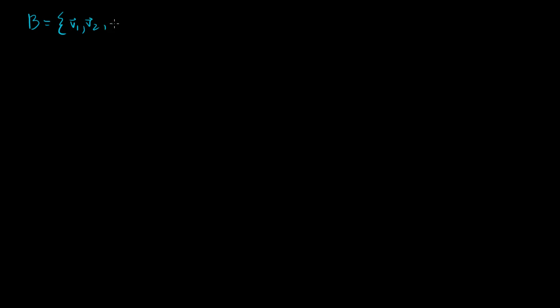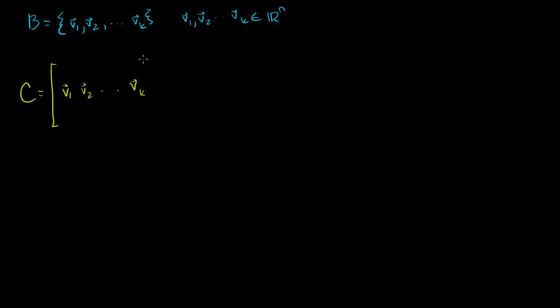Like we've done in the last several videos, let's assume that we have some set of basis vectors B. Our basis is going to be v1, v2, all the way to vk, so this will span a subspace of dimension k. Each of these vectors are members of Rn. The change of basis matrix has these basis vectors as its columns — v1, v2, all the way to vk — giving us k columns and n rows, so it's an n by k matrix.